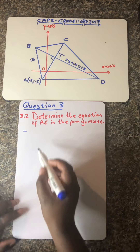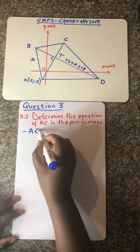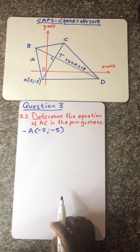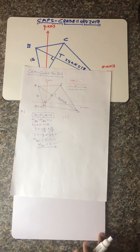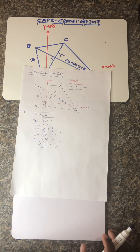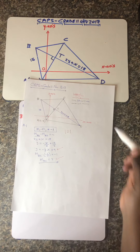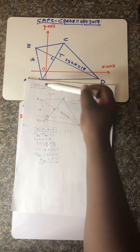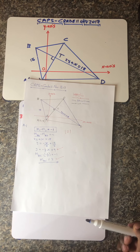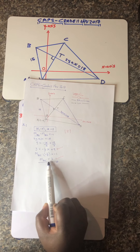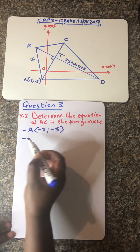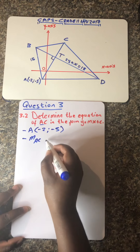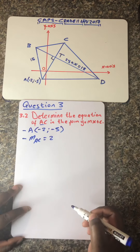Based on the information we have so far, we have the coordinates of A, which is (-2, -5). Regarding line AC, if you remember from the previous question, we were requested to determine the gradient of AC, and we made use of the equation of BD to calculate the gradient of AC. The gradient m of AC was calculated to be 2.